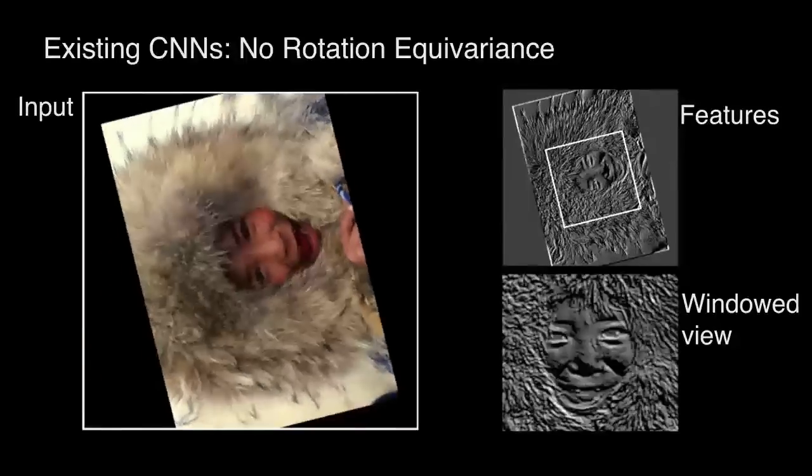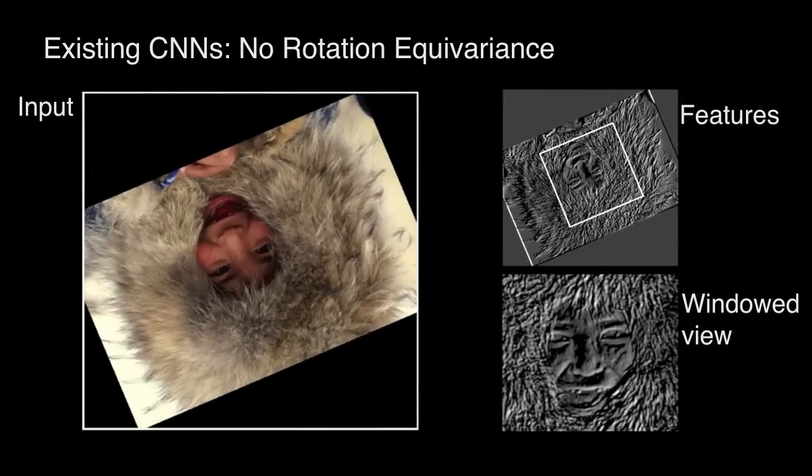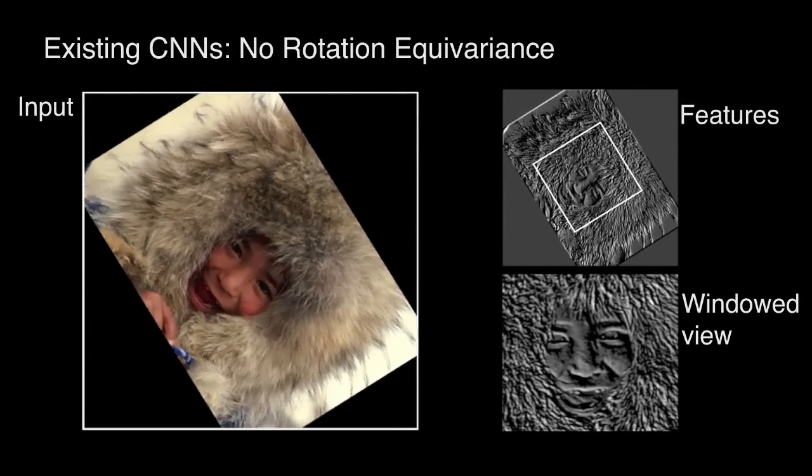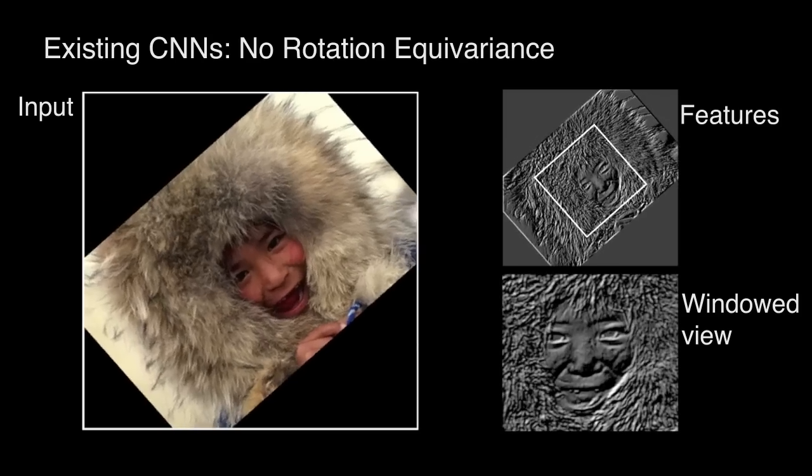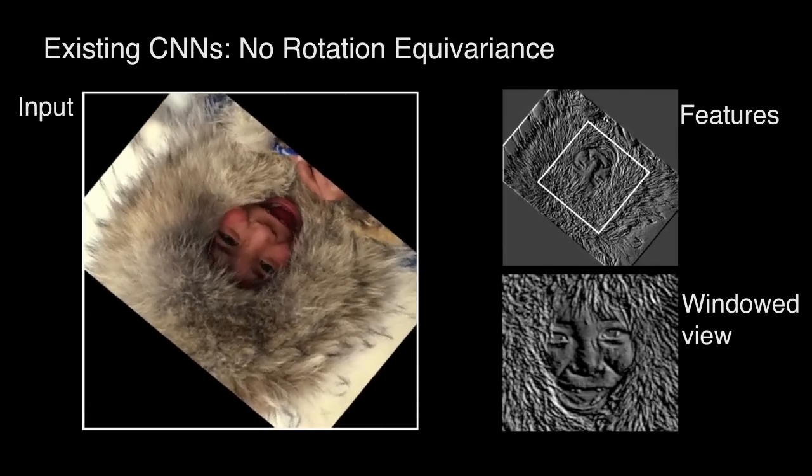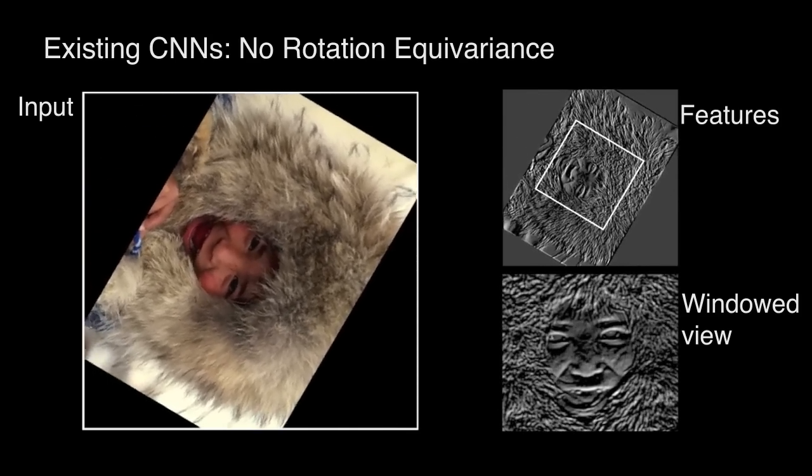If instead we consider input rotations, then we see that the motion compensated features are not stable at all. Moreover, it is non-trivial to infer the relationship between two feature maps which differ only in rotation.